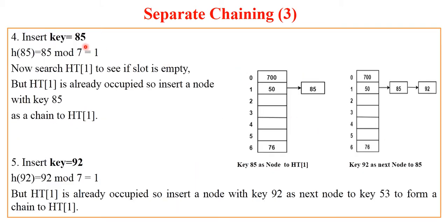Now if we try to insert 85, we know that 85 mod 7 remainder is 1. But as the slot at address HT[1] is already occupied, so we won't be searching for the next empty slot in the table.